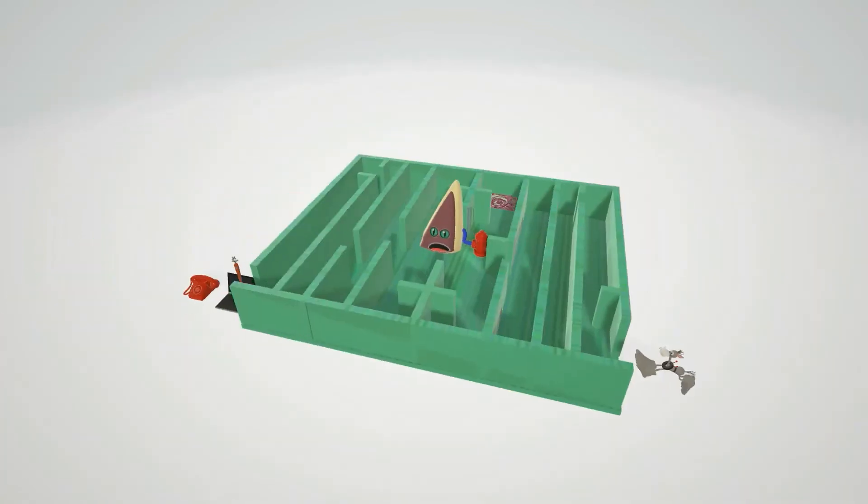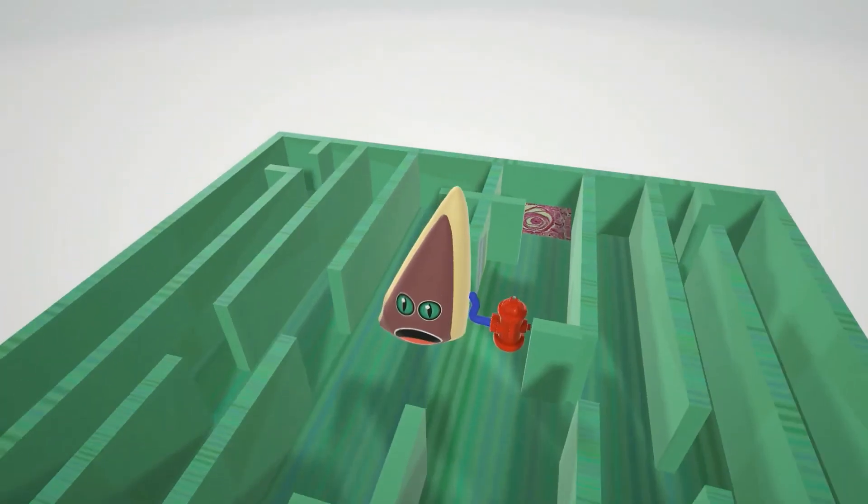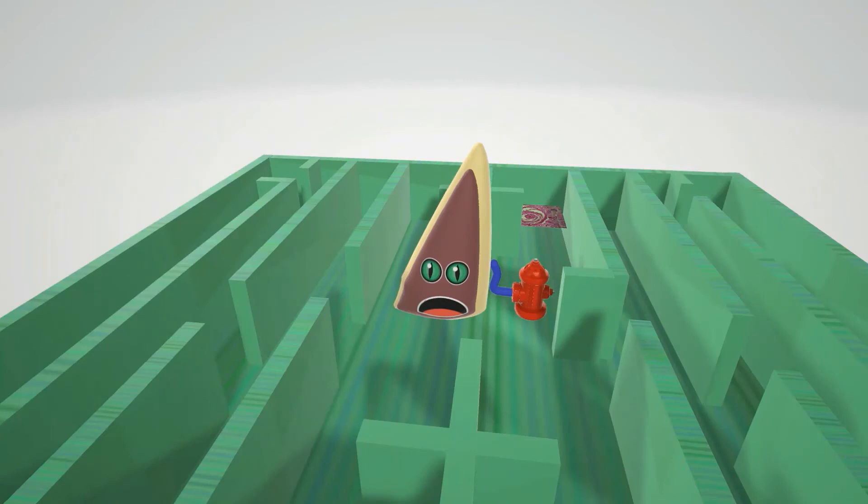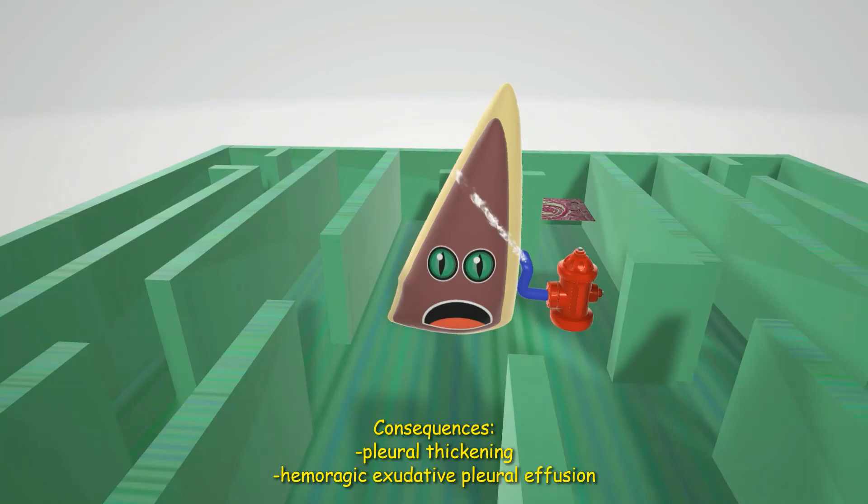In the middle of the maze we have this lung that's thickening. Mesothelioma often results in pleural thickening. We also note the hydrant shooting water into the pleural space, as mesothelioma may result in hemorrhagic exudative pleural effusion.